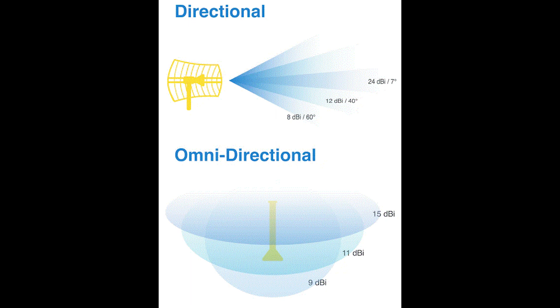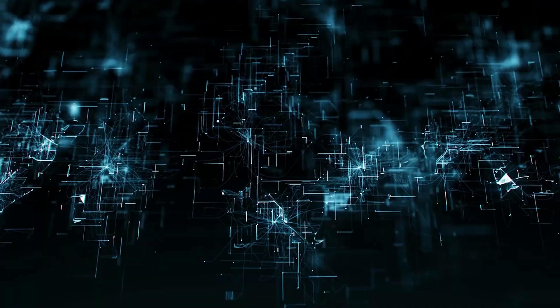Basically, omnidirectional antennas provide wide coverage but weaker signal strength in any one direction than a directional antenna.